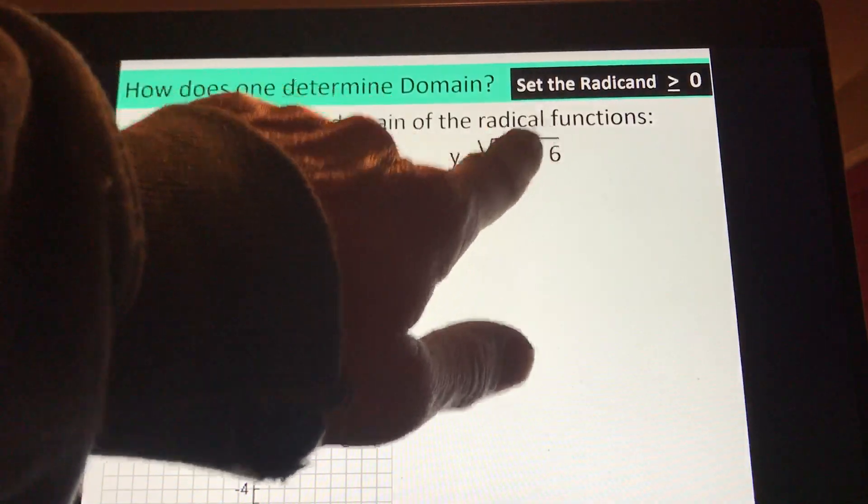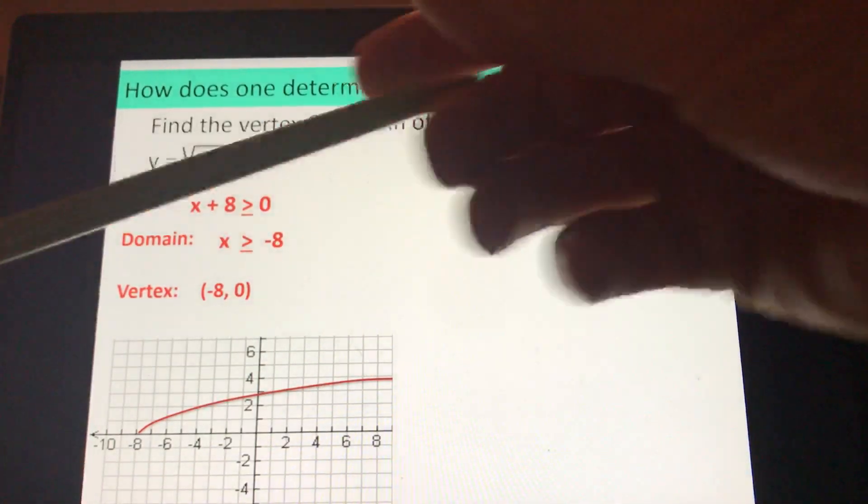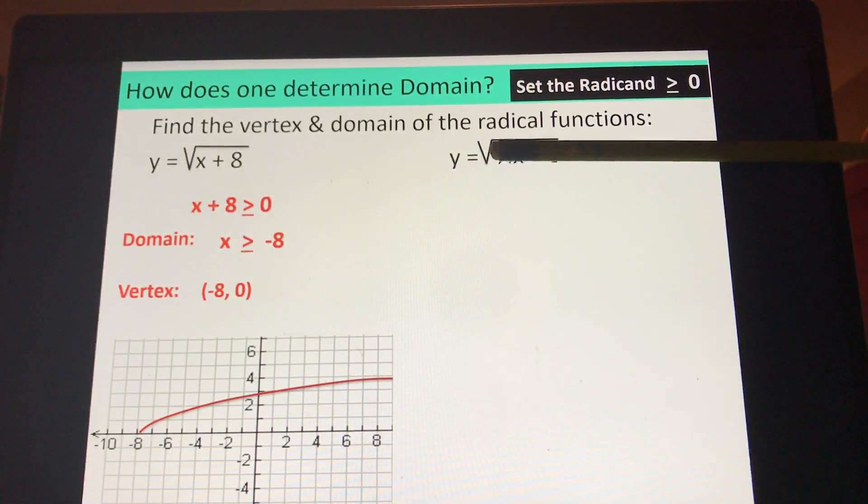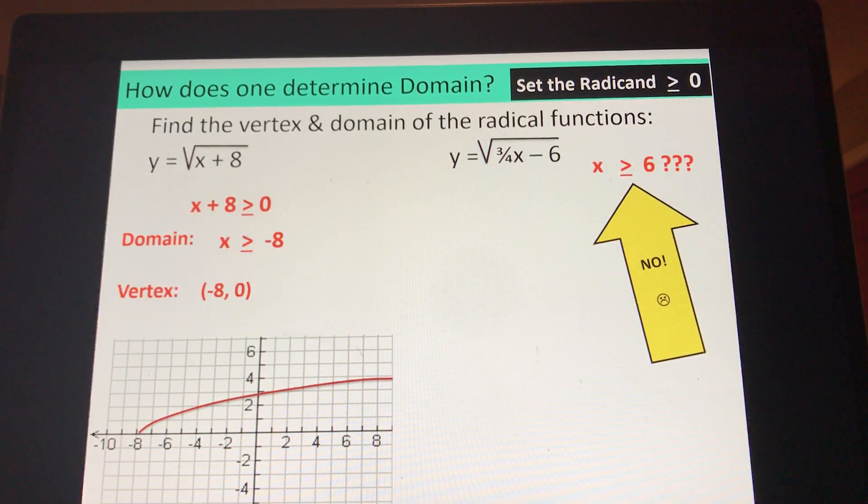Whatever this stuff is here, I'm gonna cover it up. So I'm gonna cover it up. Whatever's inside the radical here, we go, whatever's behind my pencil cannot be negative. How do you tell something it can't be negative? You got to be positive. You got to be greater than or equal to zero.